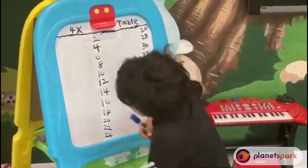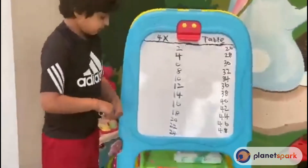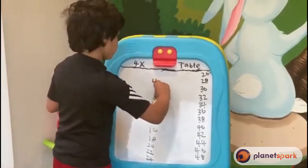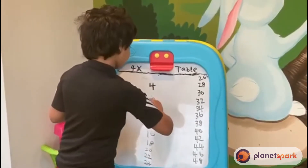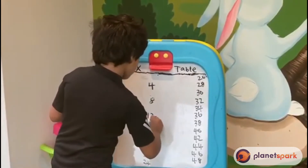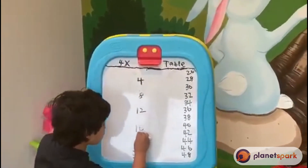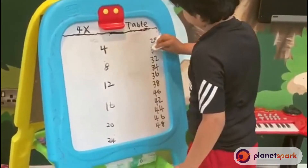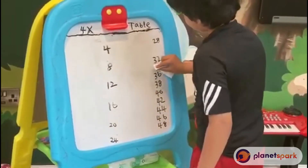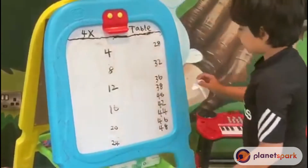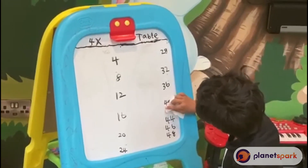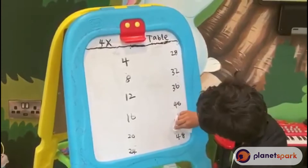So we're going to be missing out every other number, like this. We missed this number and then we have 4. We missed this number, we've got 8. We missed this number, we've got 12. We missed this number, we've got 16. We missed this number, we've got 20. We missed this number, we've got 24. We missed this number, we've got 28. We missed this number, we've got 32. We missed this number, we've got 36. We missed this number, we've got 40. We missed this number, we've got 44. We missed this number, we've got 48.